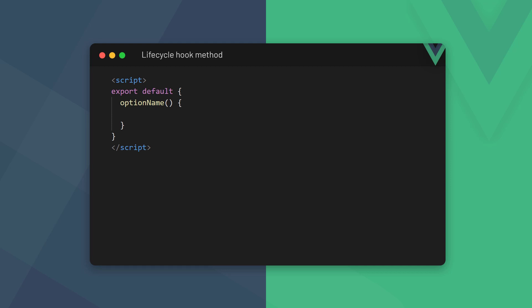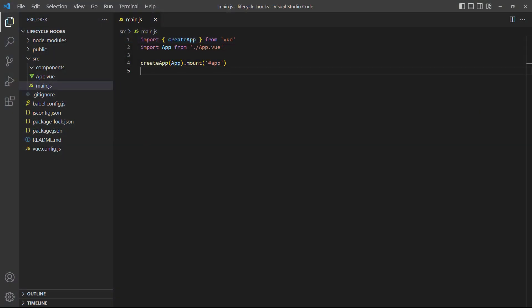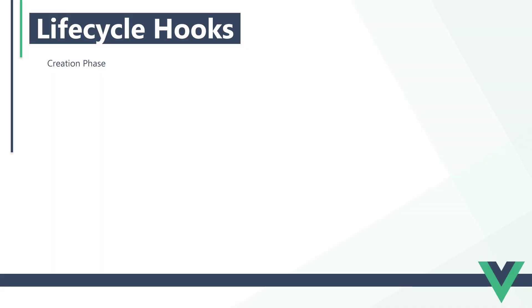Let's go through the lifecycle and the order in which the hooks are invoked. The lifecycle starts in the main.js file when we create a new Vue app with the createApp method. From there, it goes into the phases. In the creation phase, the first step Vue reaches is the beforeCreate step.